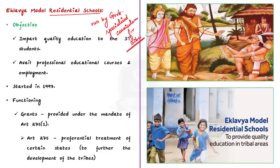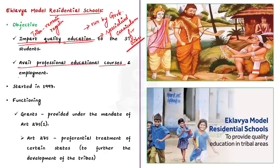Coming to the objective — tribal people live in the remote areas of the country. The main objective is to impart quality education to tribal students in remote areas, to enable them to avail professional educational courses and get employment in various sectors. These schools provide education for improving the livelihood of tribal students, with special focus on their all-round development.